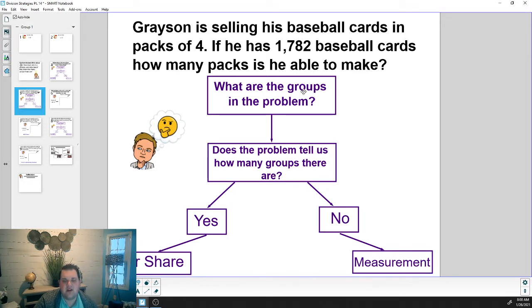Let's think about our first question: what are the groups in the problem? Enter that into PlayPosit now. If you said the groups are the packs, you're absolutely right. He has 1,782 baseball cards and he's going to make packs of four. So the packs are the groups we're making in the problem. Does he tell us how many groups there are? Enter your thinking into PlayPosit.